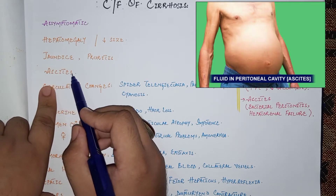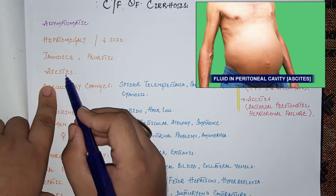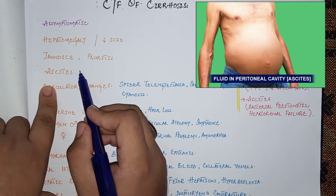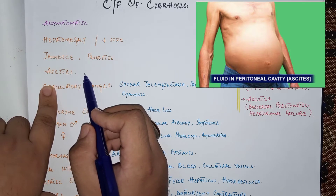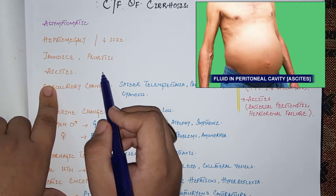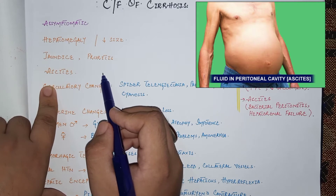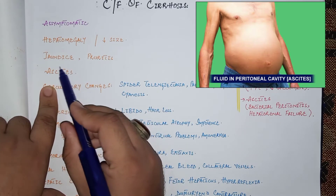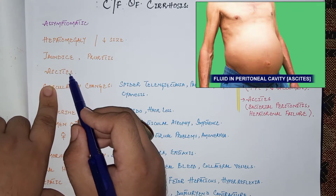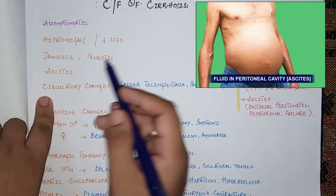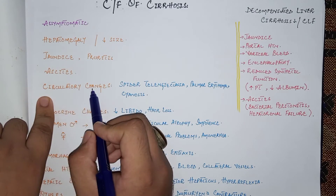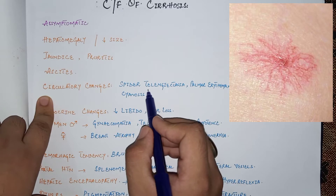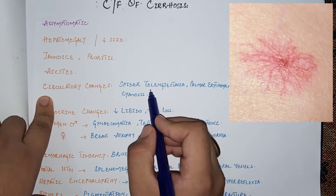Ascites is a complication of cirrhosis resulting from portal hypertension. Increased pressure in the portal vein leads to splanchnic vasodilation, and through this mechanism ascites occurs — which is the accumulation of excessive fluid in the abdominal cavity.